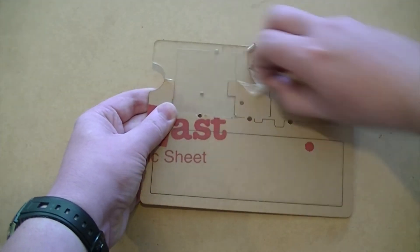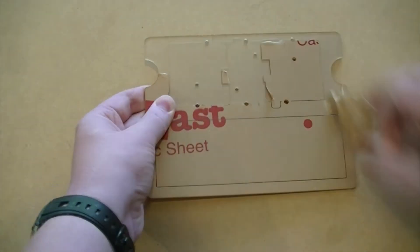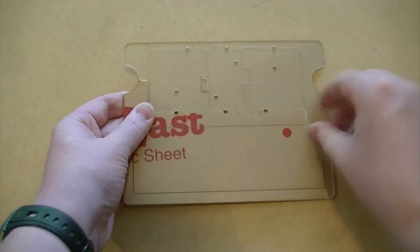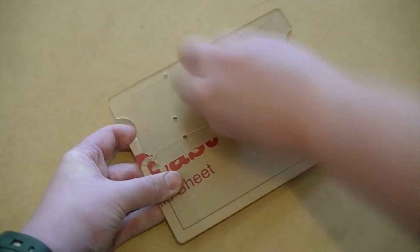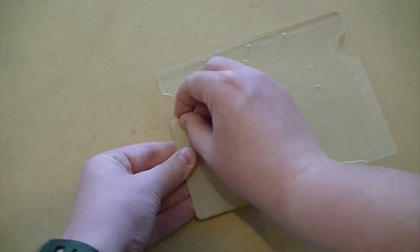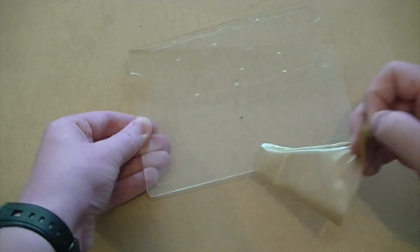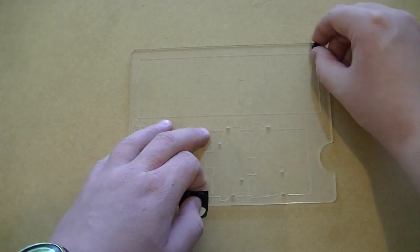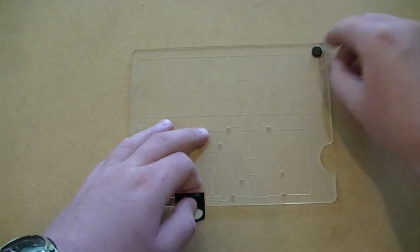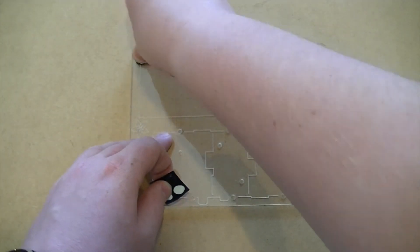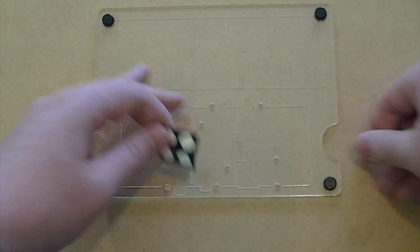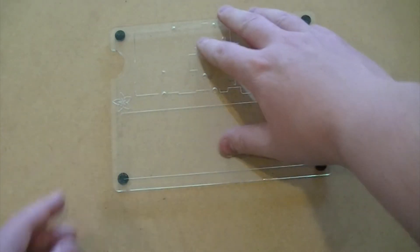Let's begin by removing the paper covering from the acrylic base. We can then attach the four rubber feet to the corners of the acrylic base. This will prevent the board from sliding.